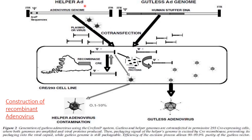To generate a gutless adenovirus, a helper adenovirus genome and a gutless adenovirus genome are required. The helper adenovirus genome consists of inverted terminal repeats on both sides, cis terminal repeats, and a loxP sequence, along with the adenovirus genome. The gutless adenovirus genome consists of inverted terminal repeats on both sides, cis terminal repeats, and the human stuffer DNA — that is, the gene of interest.